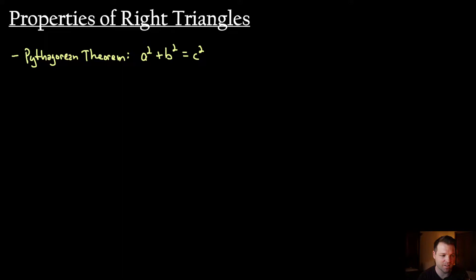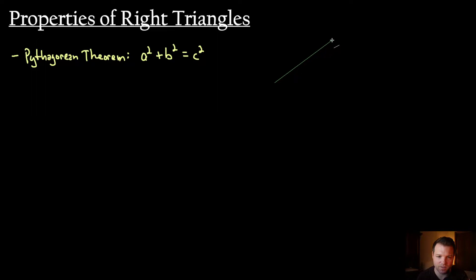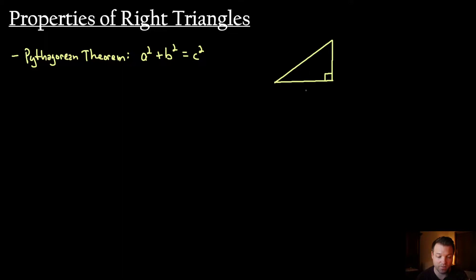To give a little context to what they're talking about here — and you probably have seen this before — you may have never actually seen this visual proof before. If I have a right triangle, let's go ahead and draw one out here. I'm going to go ahead and make this angle right. If I label these sides: let's label this side a, this side b, and this side c.